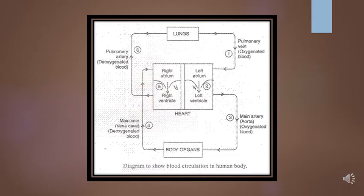From the right ventricle, the blood gets pumped into the pulmonary artery, number 6, which carries blood into lungs. There is an exchange of gases, that is of oxygen and carbon dioxide, in the lungs.